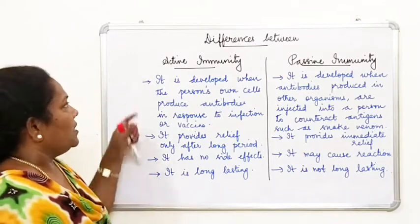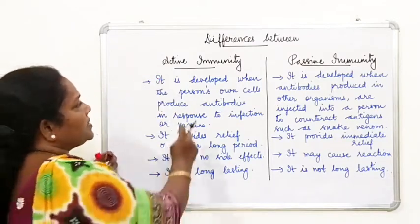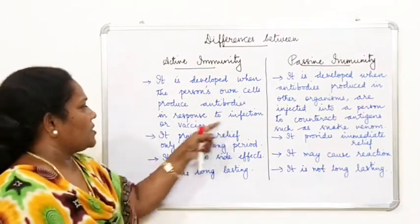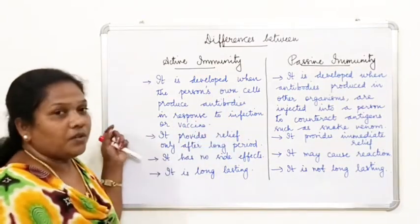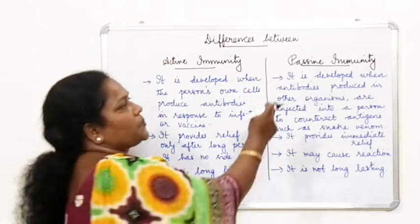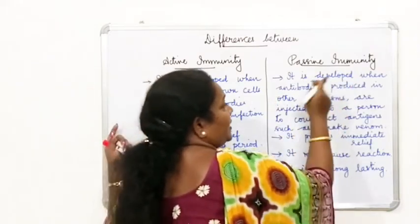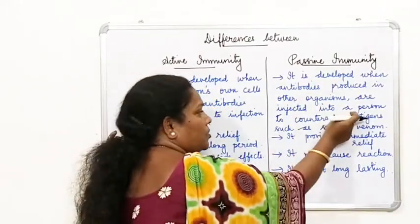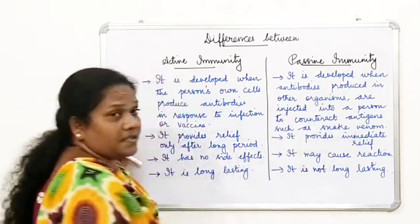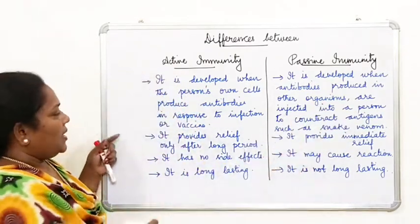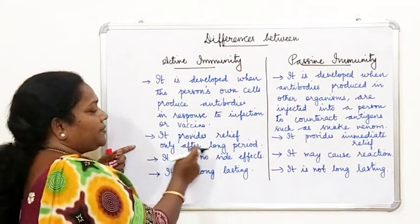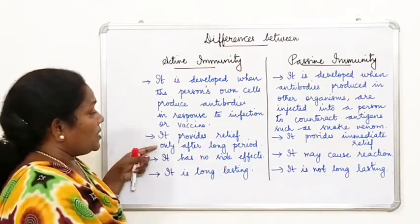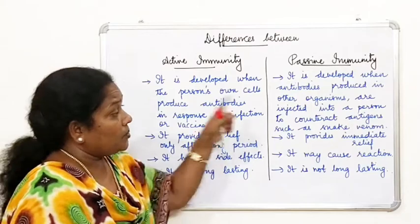Now the differences between active immunity and passive immunity: First, active immunity is developed when a person's own cells produce antibodies in response to infection or vaccine. Passive immunity is developed when antibodies produced in another organism are injected into a person, such as against snake venom. Second, active immunity provides relief only after a long period, whereas passive immunity provides immediate relief.